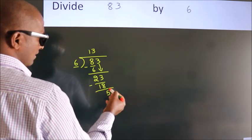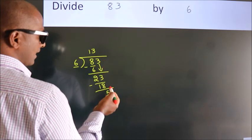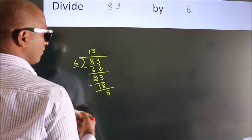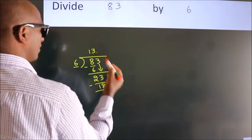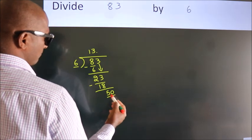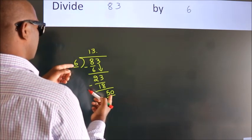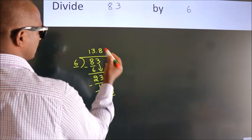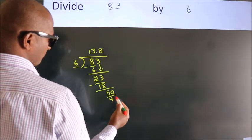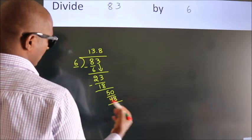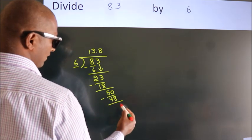After this, no more numbers to bring it down. So, what we do is, we put dot, take 0. So, 50. A number close to 50 in 6 table is 6 eights, 48. Now, we subtract. We get 2.